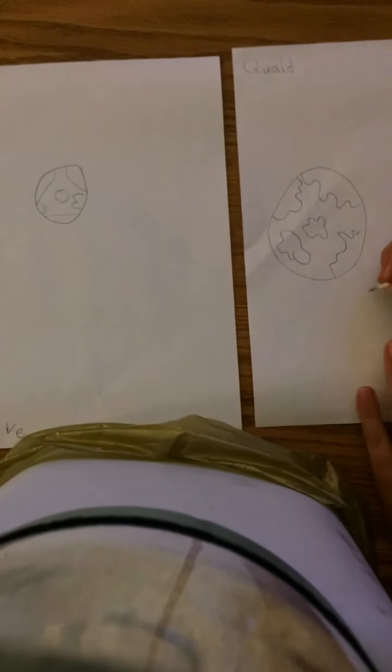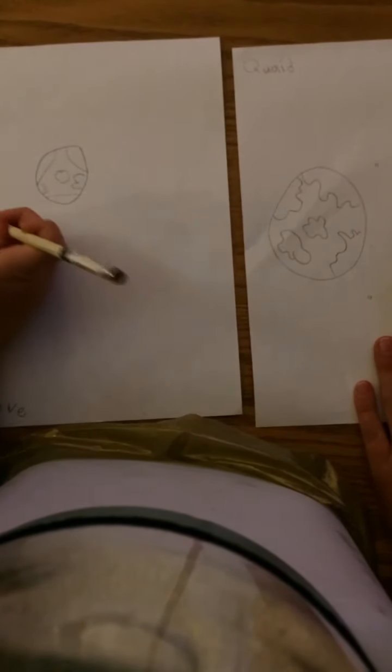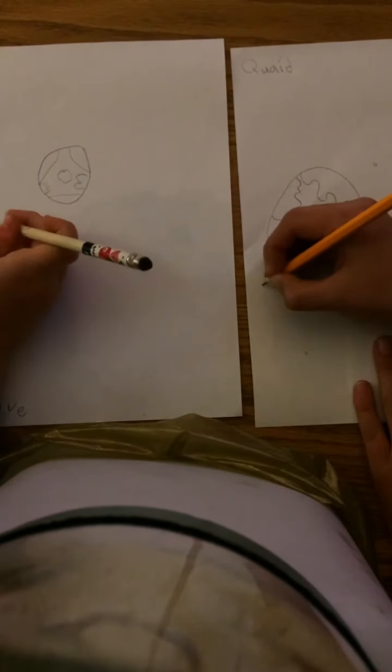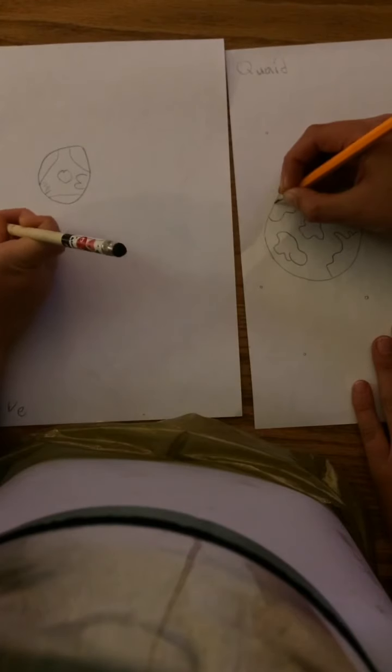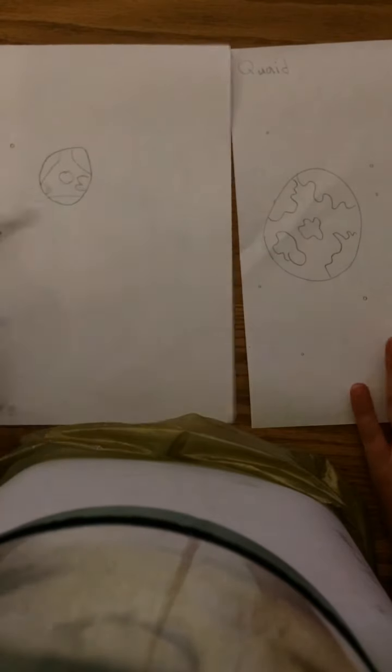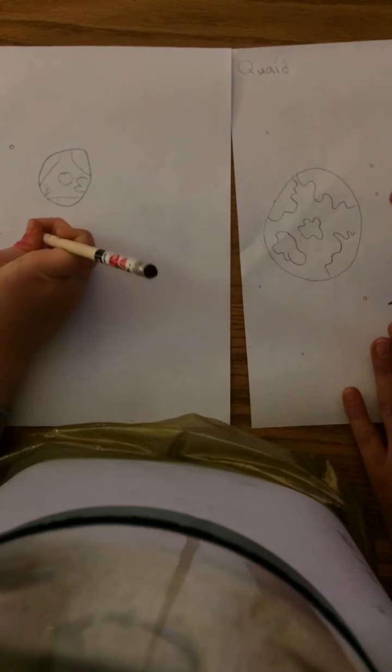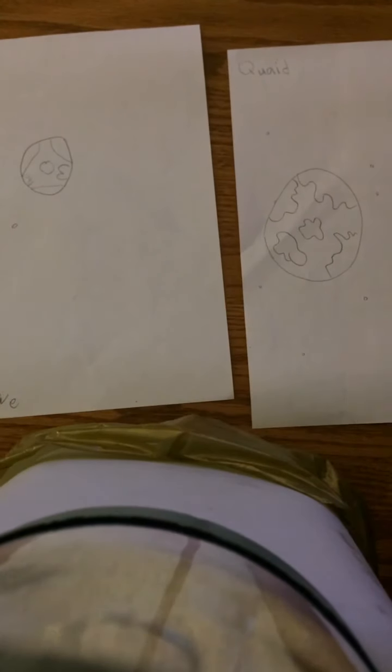Okay, so we did the Earth, her Earth. Now, you're going to do little circles everywhere. Just little tiny circles in any spot that you want. All right. All right, so there we go.